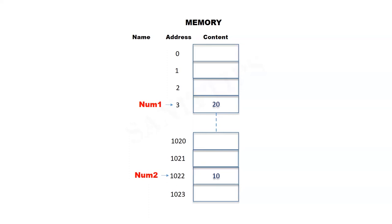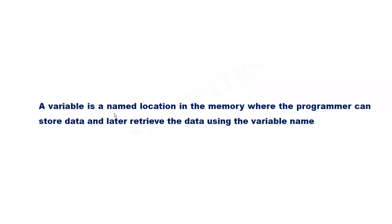We can retrieve the values from these locations using their respective names instead of their addresses. This programming technique is commonly referred to as using variables, where num1 and num2 are the variables in this case. A variable is a named location in memory where the programmer can store data and later retrieve the data using the variable name.